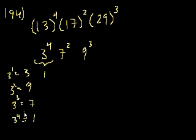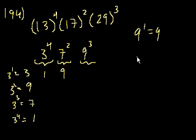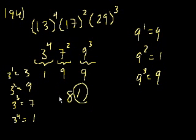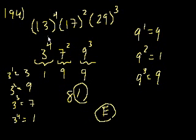For 9³: 9¹ has units digit 9; 9² = 81 has units digit 1; 9³ — multiply 81 by 9, the units digit is 9 times 1 = 9. So we have 1 × 9 × 9 = 81, and the units digit is 1. The answer is E. You can play around to see why only the units digits matter — it avoids much harder math. See you in the next video.